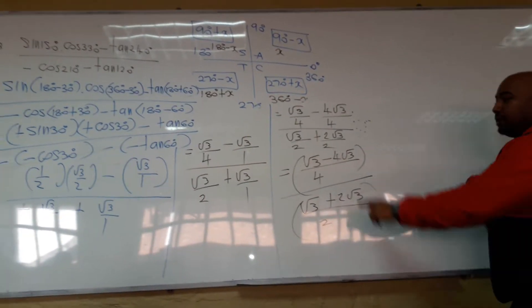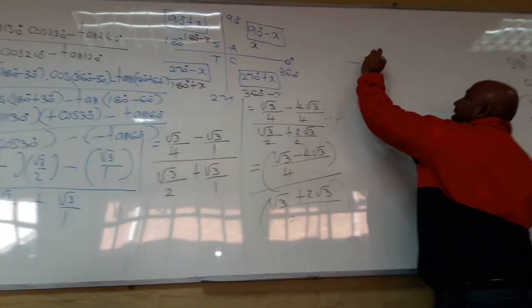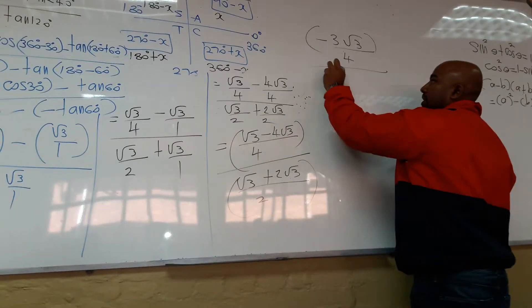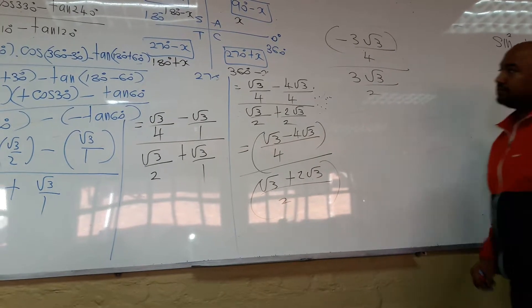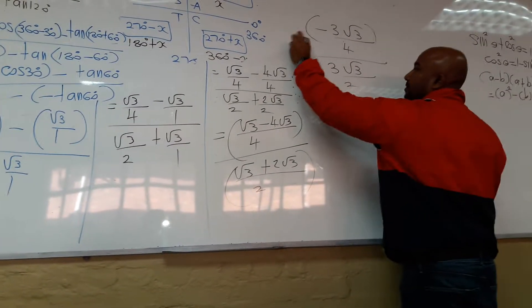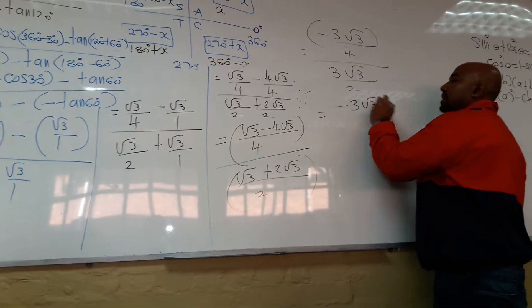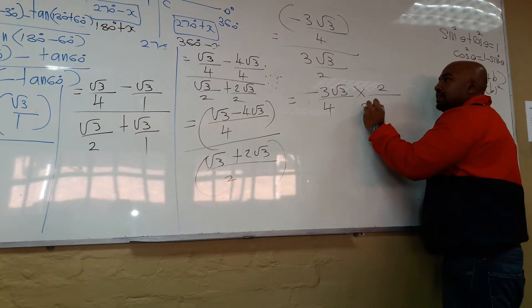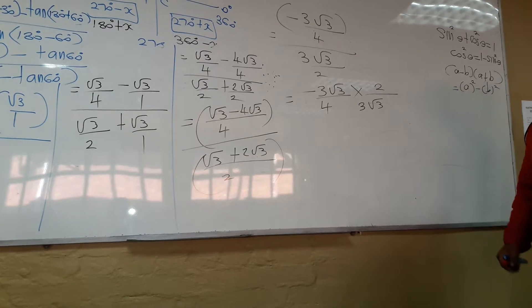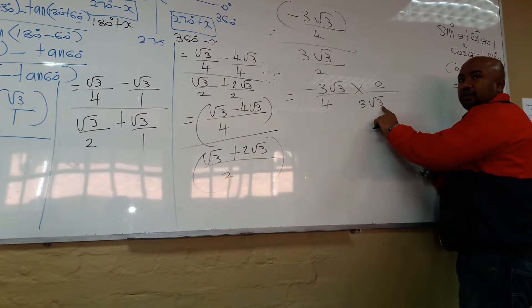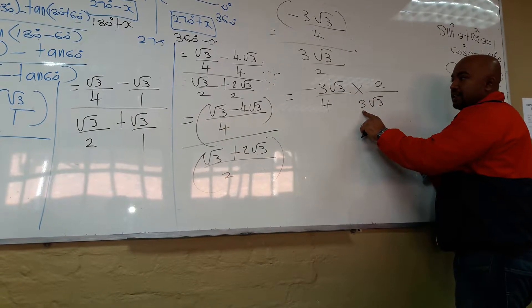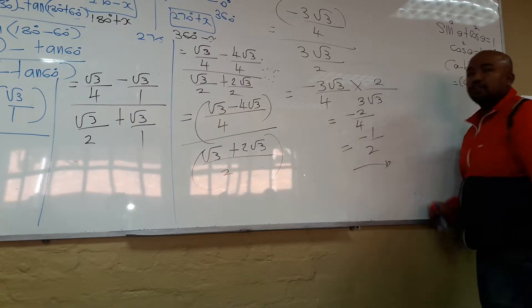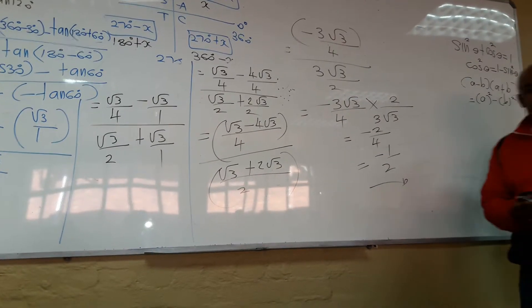So now, I can work this out. 1 minus 4, that will be minus 3 root 3 over 4. I'm going to change the division sign to multiplication. So that will be 2 divided by 3 root 3. What will happen now? Square root 3 and square root 3 cancel. 3 and 3 cancel. So I end up with minus 2 on the top 4 in the bottom, which is minus 1 over 2. Do we get minus 1 over 2 with the calculator also? Yes. You must check your answer.